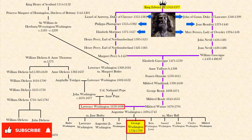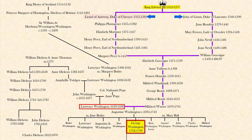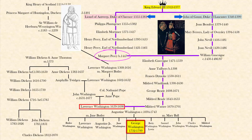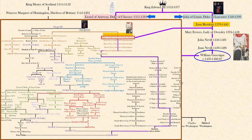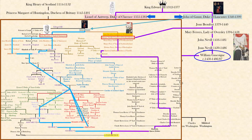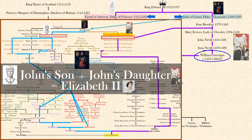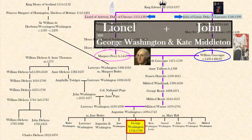Edward III is notable because his grandchildren would be fighting each other in the War of the Roses for the throne. Edward had five surviving sons. His second son, Lionel of Antwerp, Duke of Clarence, produced Margaret Percy's line. And his third son, the famous John of Gaunt, Duke of Lancaster, produced William Gascoigne's line through his daughter Joan. Joan also had another daughter, which trails down to Elizabeth II's maternal line. And as seen in my family tree video on Elizabeth II, John of Gaunt's son — so Joan's brother — gave us Elizabeth's paternal line as well. So to sum it all up: John of Gaunt gave us Elizabeth II paternally and maternally, and then John plus Lionel gave us George Washington and Kate Middleton.